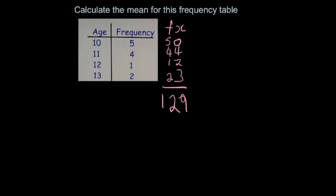Then because there's 4 categories, we're going to divide by 4. So we're going to divide that by 4, so we're going to do 129 divided by 4. And whenever you do it in your calculator, you get an answer of 32.25.